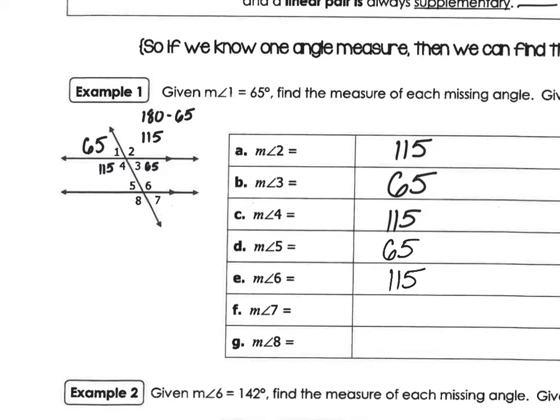Angle seven would be the same as angle three, so seven is 65. And angle eight would correspond to angle four, so eight is 115.